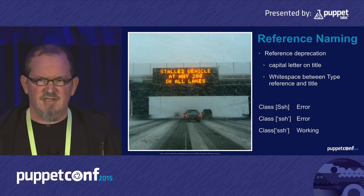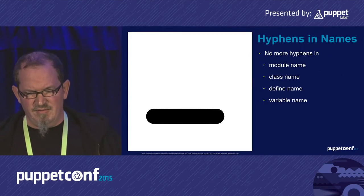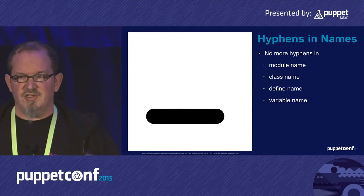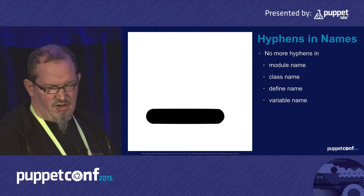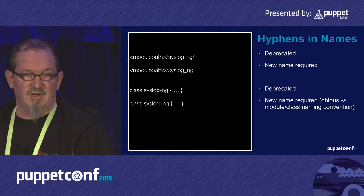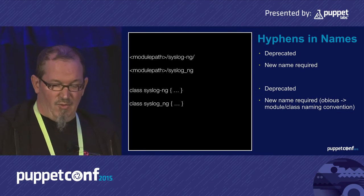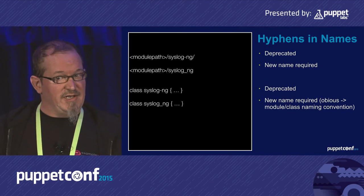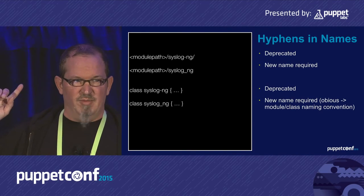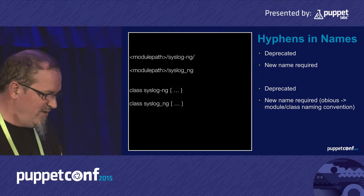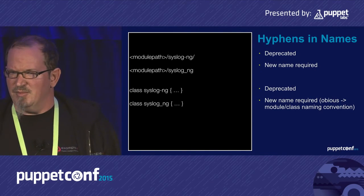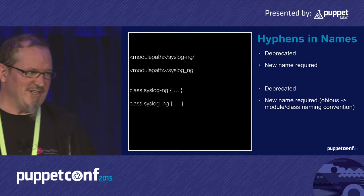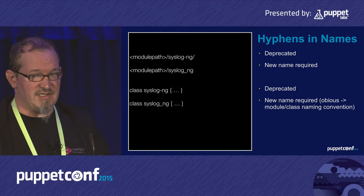Hyphens are no longer allowed in module names, class names, or defined type names. It's an arithmetical operator now, not a string. If you find a module named 'syslog-ng' because that's the name of the software — please don't name the module that way. You can name it 'syslog_ng' with an underscore. By the way, this has been deprecated since Puppet 3. So everybody reading their Puppet master log files for deprecation warnings... yes, most people do that. Start looking at that file — it already contains information about what will be gone in future releases, and the future is now: Puppet 4 is out.